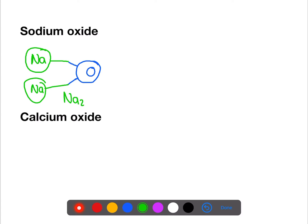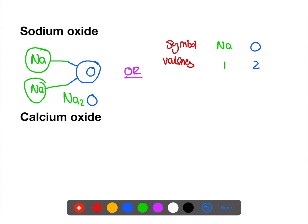We can see that oxygen has a valency which is not being used, so we go back in and fill that with another sodium. This leads us to a formula of Na₂O. The second way that we can write a formula is to find the symbol for our elements — we have Na and O — then find the valency, swap the valency over, and divide if necessary. In this case there's no common factor.